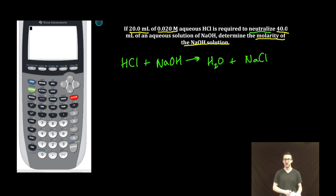Now, solution stoichiometry requires us to use the molarity formula, which is moles per liter, in addition to our normal stoichiometry conversions.